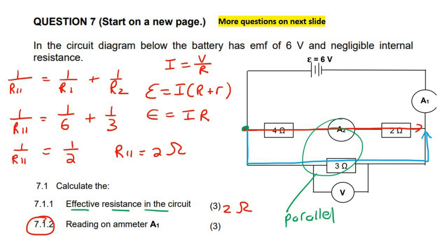And so we could then say that the EMF is 6, the current is what we're trying to find, and then R is the resistance in the circuit, which is 2. If you then work out I, you would get 3 amps. So it's 3 amps.